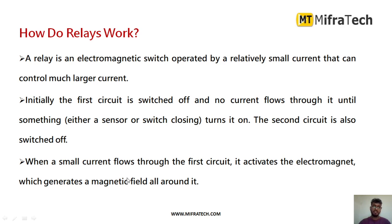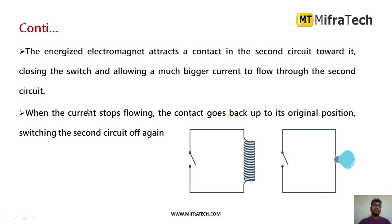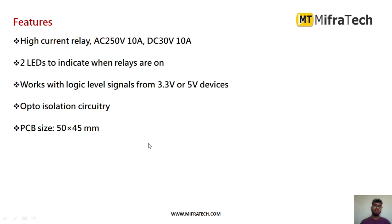The relay has a high current coil which generates a magnetic field around it. The energized electromagnet attracts a contact in the second circuit, closing the switch so that a much bigger current can flow through the second circuit. Whenever that current stops flowing, the contact goes back to its original position. This is how the relay works internally.